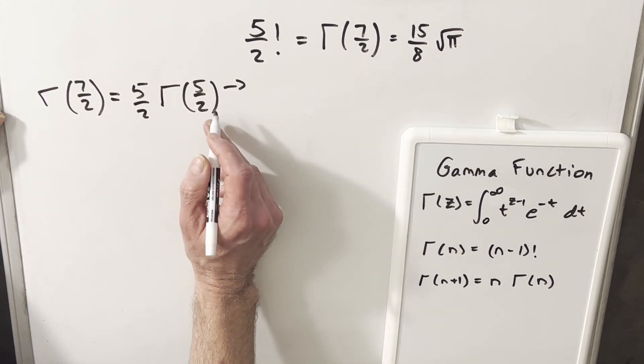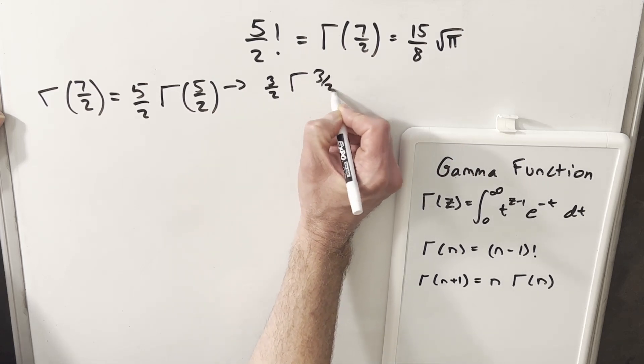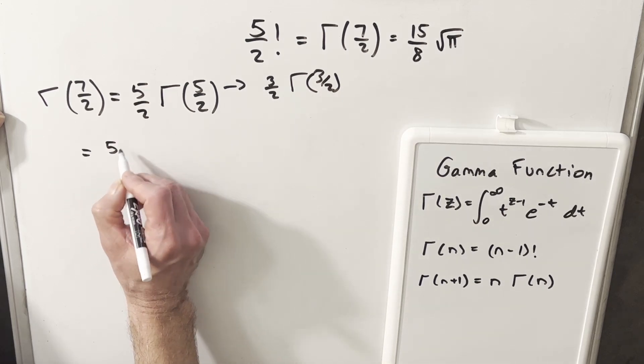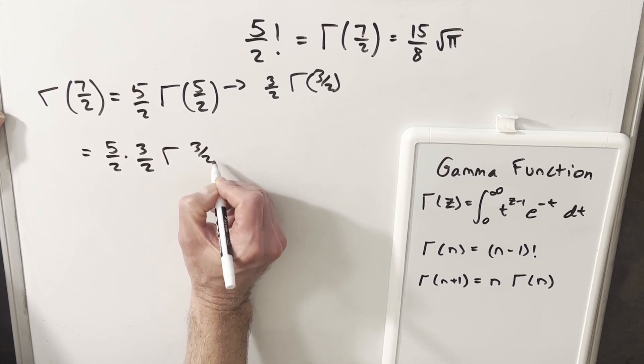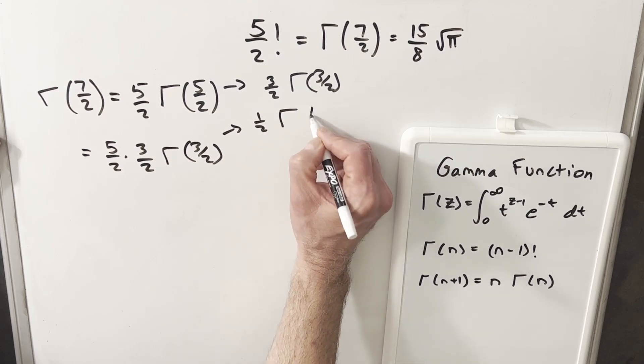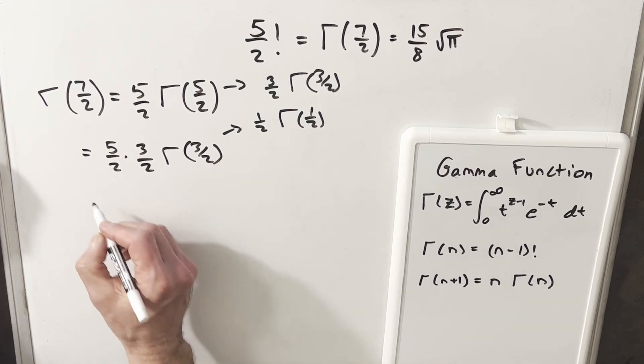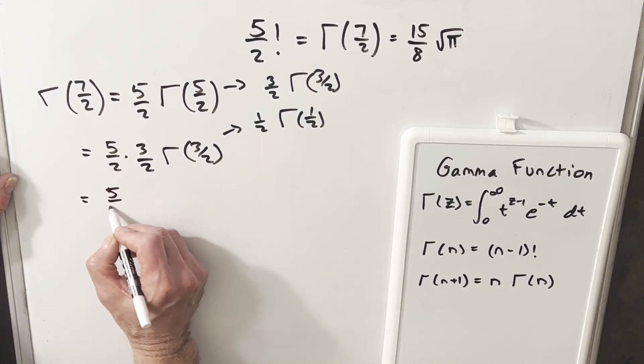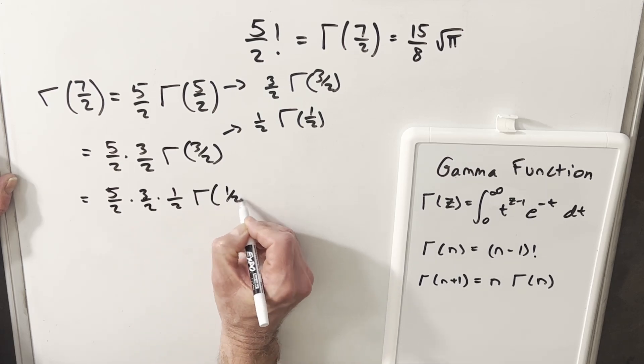But then we can just use this repeatedly. Gamma of five halves could be written as three halves times gamma of three halves. So substituting that back in, we would have five halves times three halves times gamma three halves. But this could be written as one half gamma one half. So substituting this back in, we have five halves times three halves times one half gamma one half.